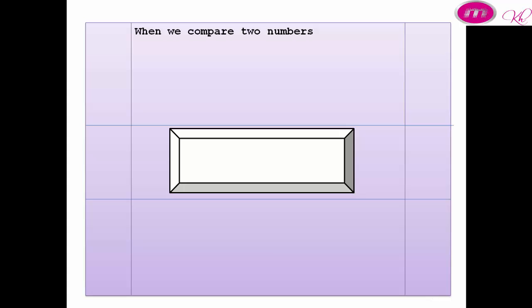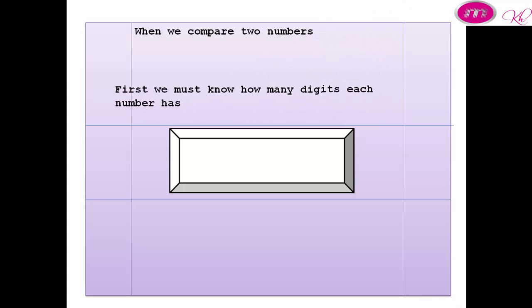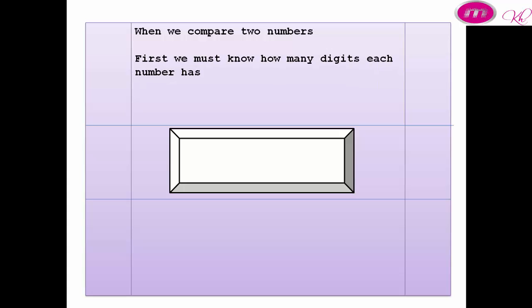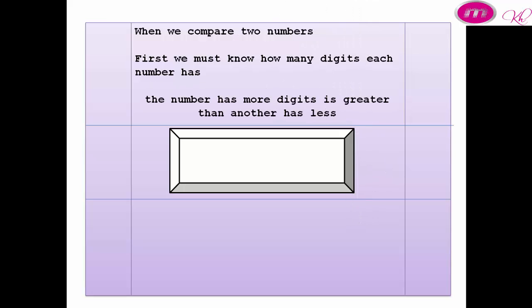When we compare two numbers, first we must know how many digits each number has. The number that has more digits is greater than the other.